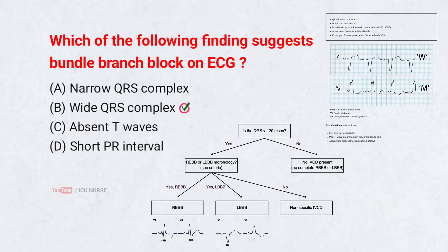Bundle branch blocks slow electrical conduction through the ventricular pathways, causing a widened QRS complex. This widening reflects delayed and altered ventricular activation.